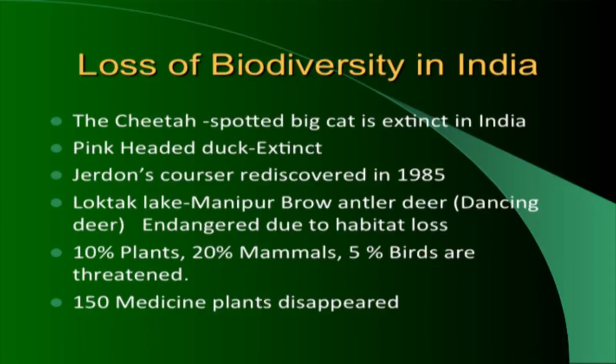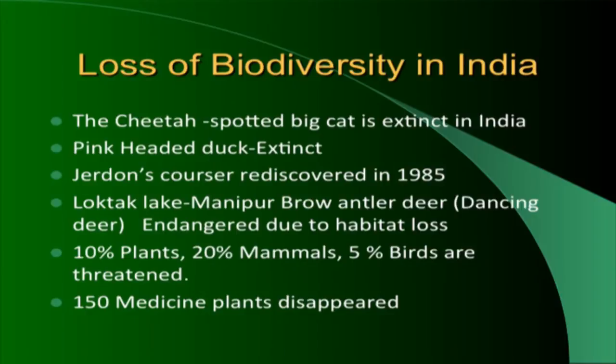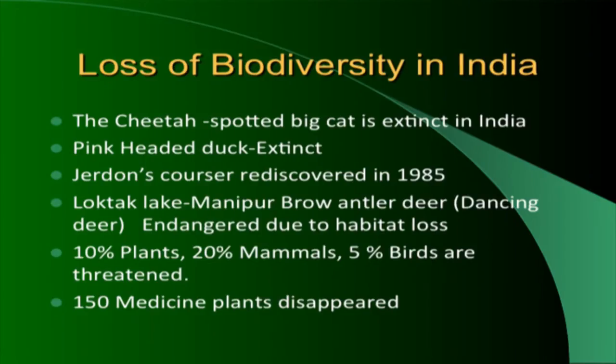The historical range of tigers has shrunk dramatically — the dark brown area on maps shows historical range versus the tiny current range. The Indian cheetah and pink-headed duck are extinct. There is also an interesting animal called the dancing deer in Manipur — it lives on floating islands made of fumidi plants, so it appears to dance. It is endangered because its habitat is destroyed.